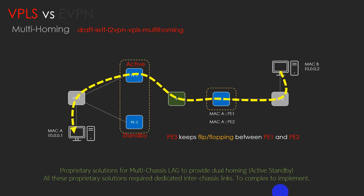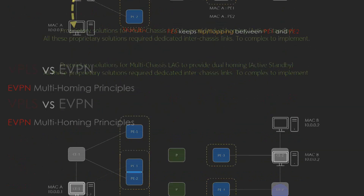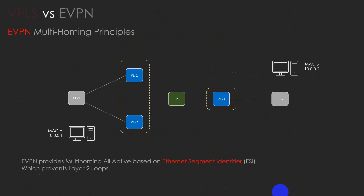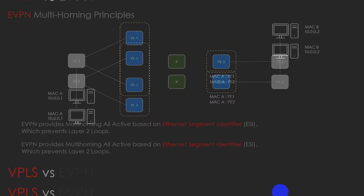Whereas in EVPN, multi-homing is a feature that enables a device to connect to multiple PEs in an EVPN network. It provides redundancy and load balancing capabilities, and allows customer networks to have multiple active connections to the service provider, enhancing network resiliency, optimization, and traffic distribution. There are two primary types of multi-homing in EVPN: single active multi-homing, where one link is active and another is standby, and all-active multi-homing, where all attached circuits are active simultaneously, allowing load balancing and active-active redundancy.